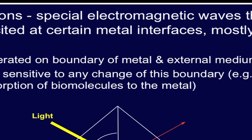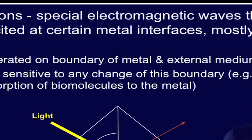Surface plasmons are special electromagnetic waves that can be excited at certain metal interfaces — mostly gold and silver are used for this purpose. The surface plasmons are electromagnetic waves that propagate parallel to the metal or dielectric surface. From that interface, the plasmons are created when the light energy from a polarized incident photon is coupled into the oscillation of the radiation mode of free electron density present in the metal film.